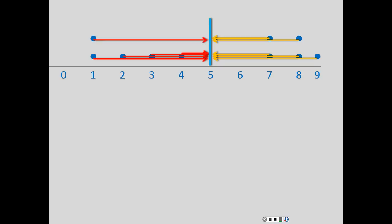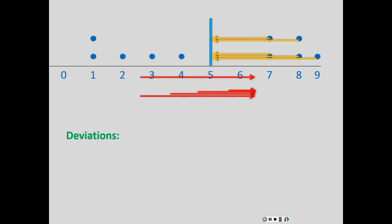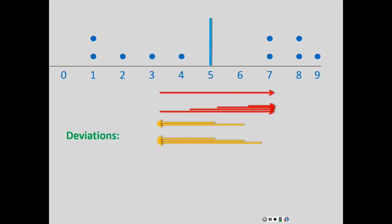One nice measure of variability is the median absolute deviation, or MAD. If you ignore the sign and just use the absolute deviations — negative four becomes positive four — you add them all up and divide by the number of observations for the mean absolute deviation, or find the median of the deviations for the median absolute deviation. Usually you'd find the average deviation from the median rather than the mean, but there are many variations you can use.